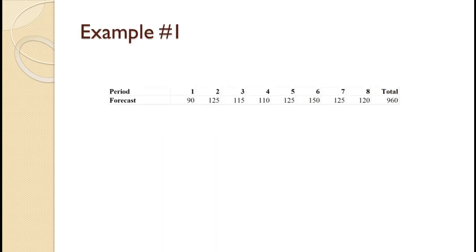In this first example, a company has demand of 90 in period 1, 125 in period 2, 115 in period 3, 110 in period 4, 125 in period 5, 150 in period 6, 125 in period 7, and 120 in period 8. That gives us total demand across the 8 periods of 960.